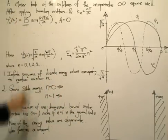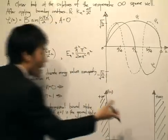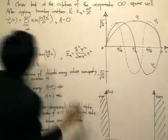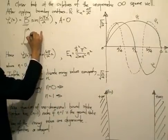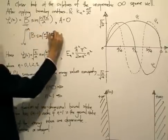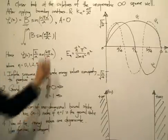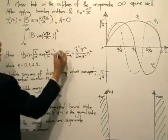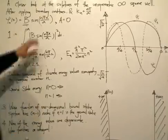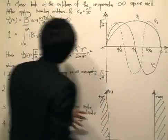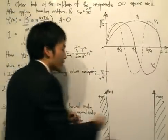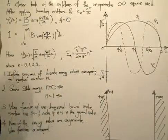To normalize, we know that ψ_n applies in the region where the particle can exist — from zero to a. So we integrate from zero to a of |B sin(nπx/a)|² dx, and this must equal one. This tells us: take the probability density function, sum all of it, and it must equal one — because the probability of finding the particle somewhere in this region has to add up to one.